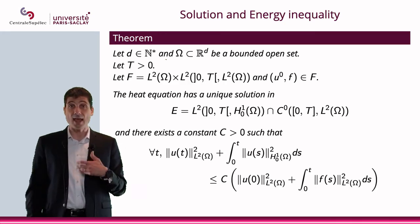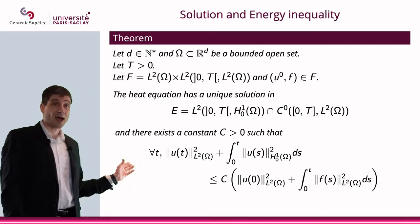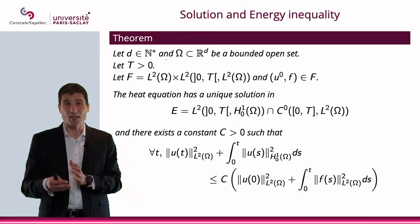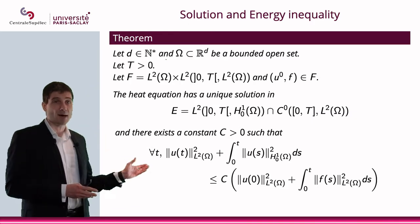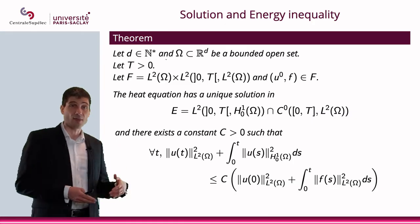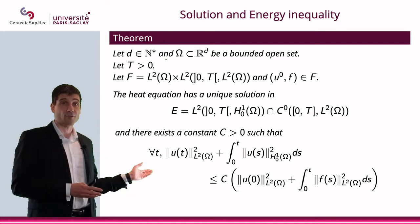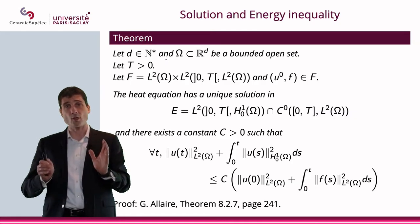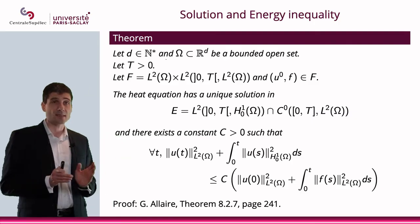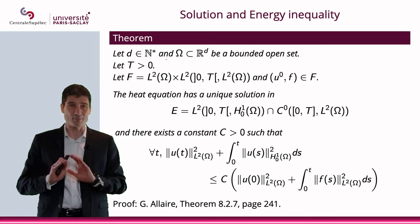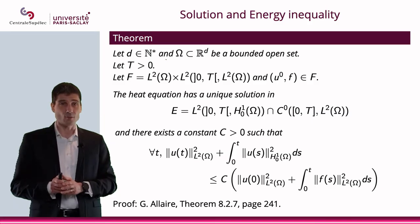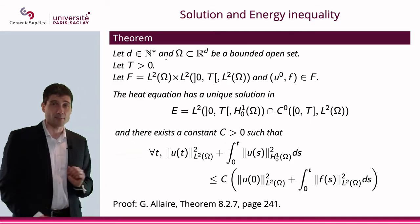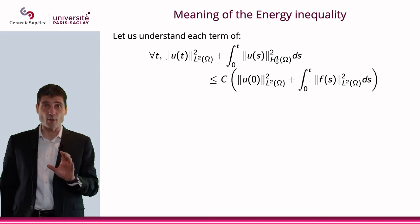Furthermore, there exists a constant C such that we have this inequality here. The norm L² of U plus the norm L²(0,T; H¹₀) of U is bounded by the norm L² of the initial condition and the norm L²(0,T; L²) of the data. The proof of this theorem is not something we're going to do in this course, but here is a reference where it's done very well — it's beautifully written, so I suggest you go see the proof there. What we're going to do here is explain what this inequality means.